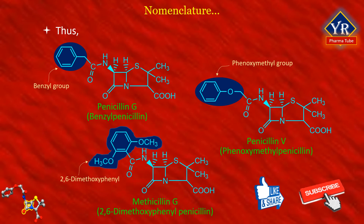For the most part, the penicillin V and methicillin ring systems serve well for naming and comparing closely similar penicillin structures, but they are too restrictive to be applied to compounds with unusual substituents or to ring-modified derivatives.